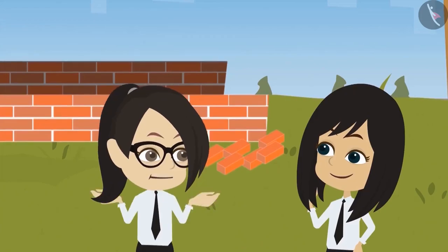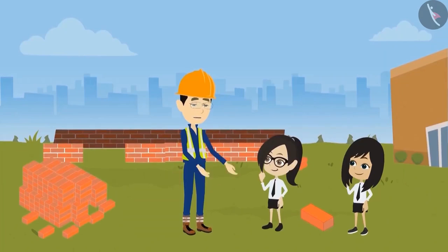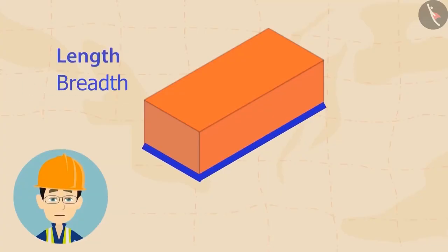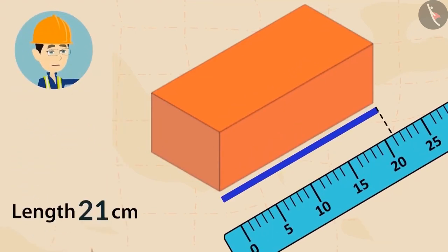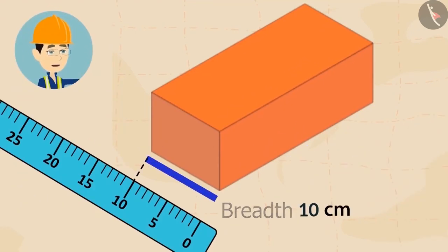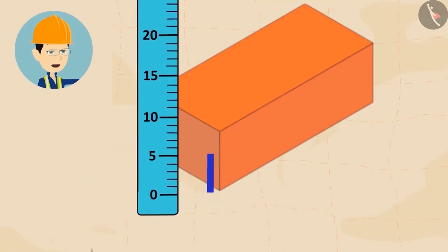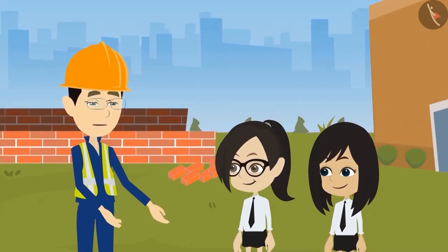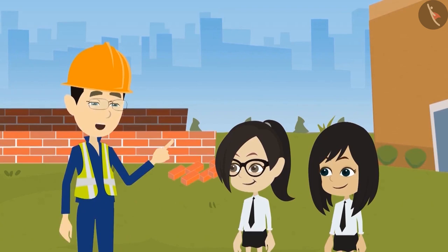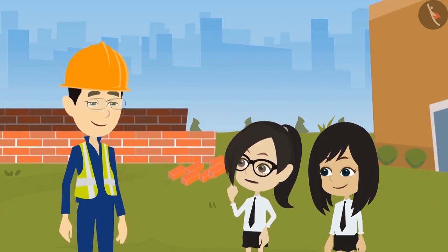Yes, you are right. But are all bricks this small? To measure a brick, we measure its length, breadth, and height. The length of this brick is 21 cm, breadth is 10 cm, and height is 8 cm.